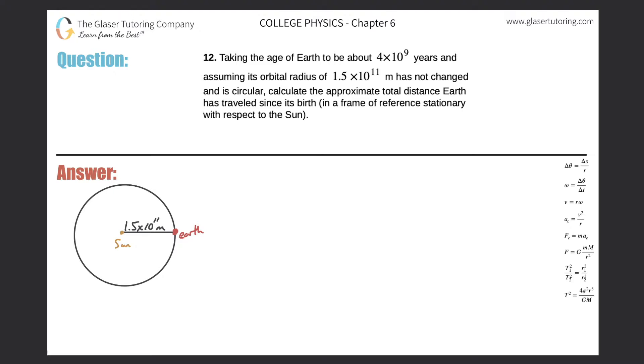Number 12, taking the age of Earth to be about 4 times 10 to the 9 years and assuming its orbital radius of 1.5 times 10 to the 11 meters has not changed and is circular, calculate the approximate total distance the Earth has traveled since its birth in a frame of reference stationary with respect to the sun.